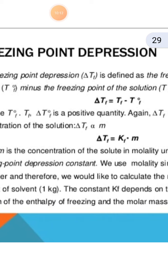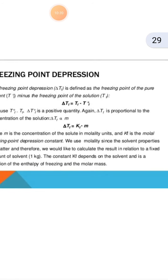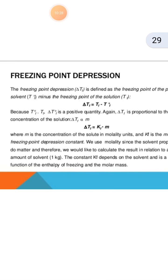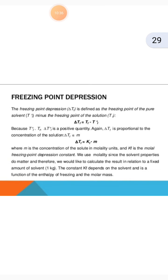The freezing point depression ΔTf is a positive quantity, proportional to the concentration of the solute in molality units. The equation is ΔTf = Kf × m, where Kf is the molal freezing point depression constant. We use molality since solvent properties do matter, and therefore we calculate the result in relation to a fixed amount of solvent.